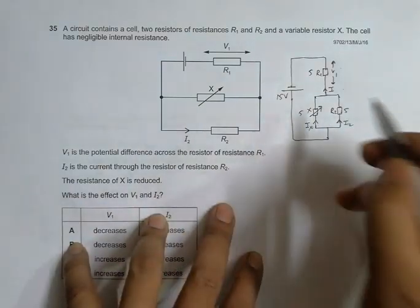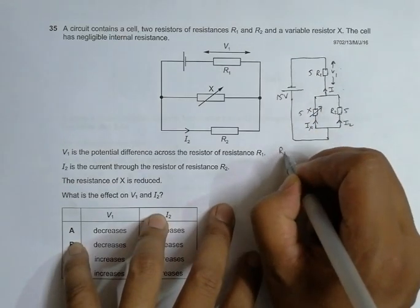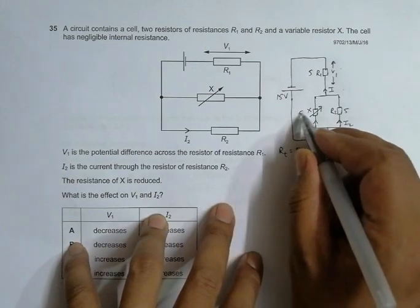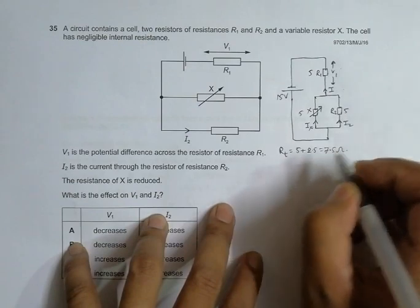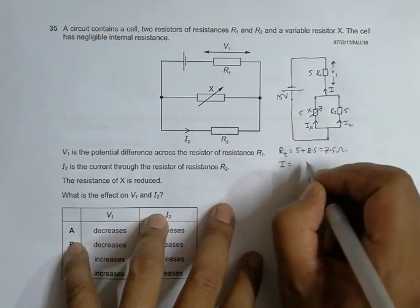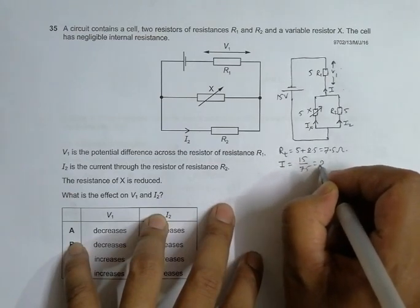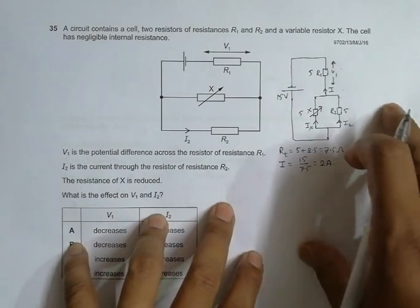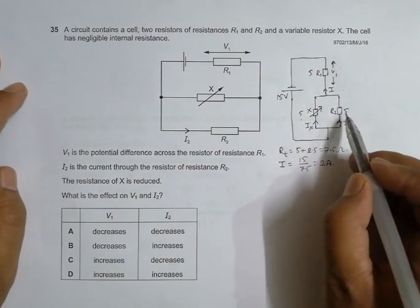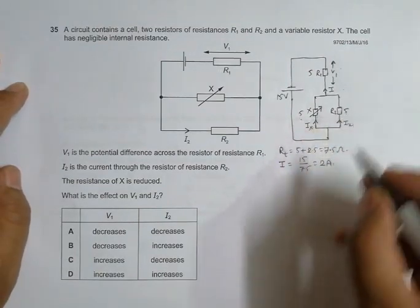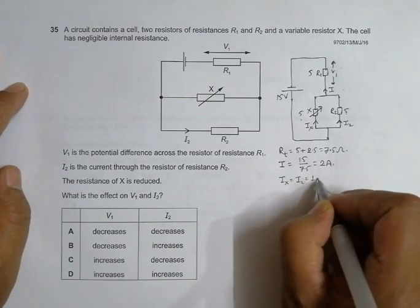Now in this case, the total resistance in the circuit will be equal to 5 plus parallel of these things, which is 2.5, equal to 7.5 ohm. This gives us the total current in the circuit is equal to 15 volt by R total 7.5, equal to 2 ampere. And now since the resistors are right now equal, the current will be divided equally. So this gives us Ix equal to I2 equal to 1 ampere.